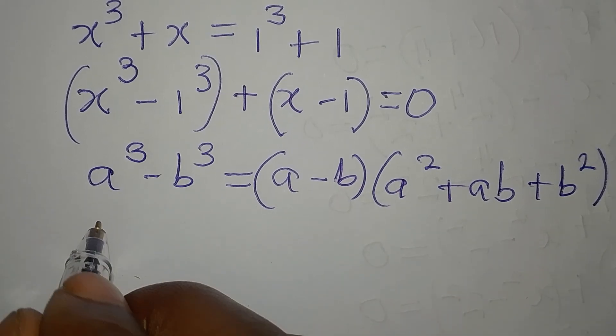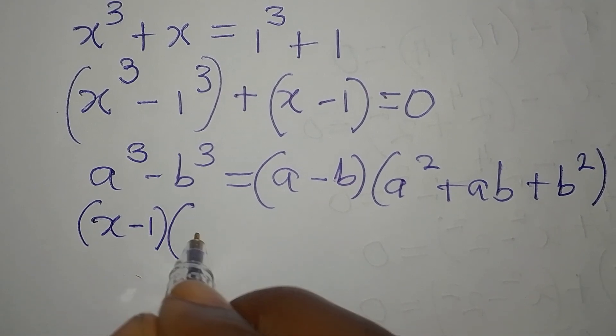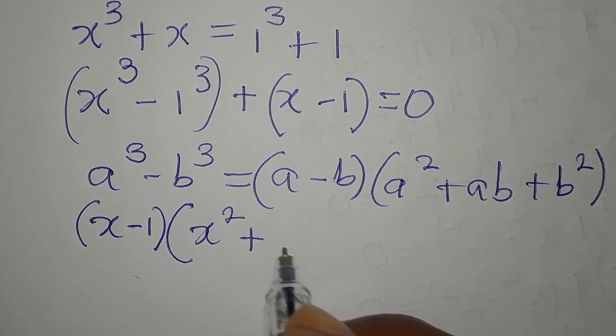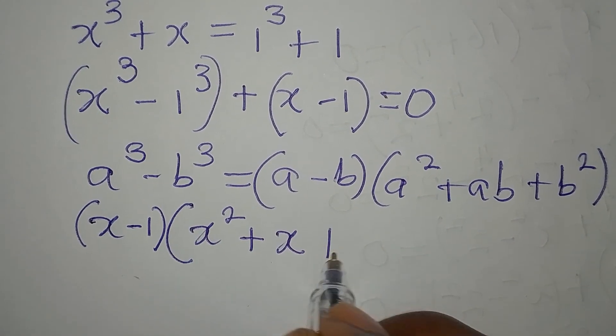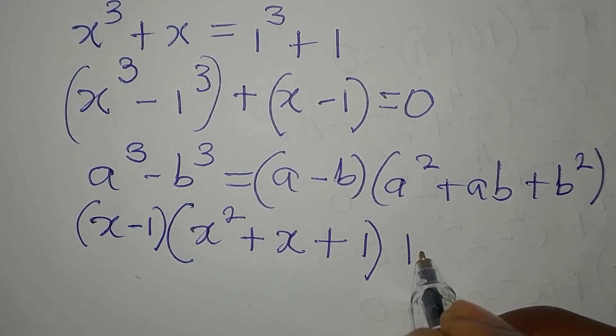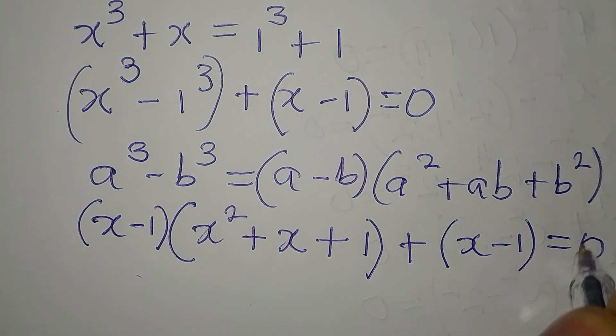a minus b is x minus 1, into a squared which is x squared, plus ab which is x times 1 or x, plus b squared which is 1. Then plus, open bracket, x minus 1, close bracket, equals 0.